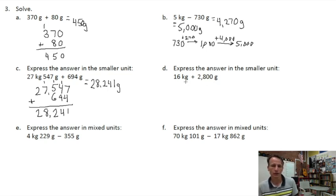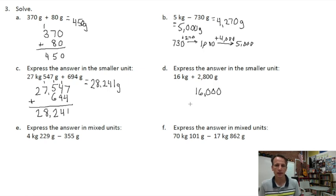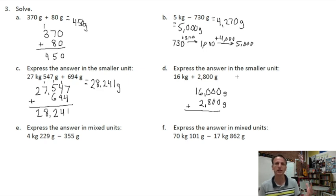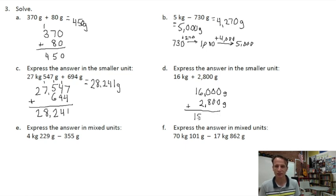Part d: 16 kilograms is 16,000 grams, and adding 2800 grams. It's worth keeping units in your calculations here so you make sure you're adding grams to grams and not mixing units. Looking at this, there's no regrouping needed, so the answer is 18,800 grams. Always write your answer clearly — that's what people need to see.